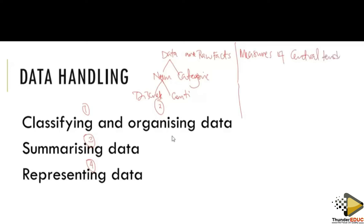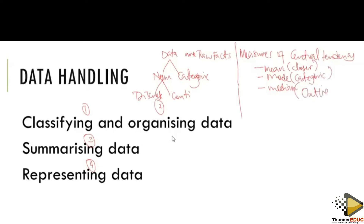Measures of central tendency — there are three of them; I call them the triple M: mean, mode, and median. Mean is best when numbers are close to each other. Mode is used when the data is categorical. Median is used when we have what we call an outlier — that is when median best represents the data.